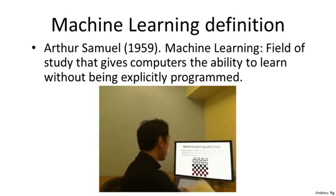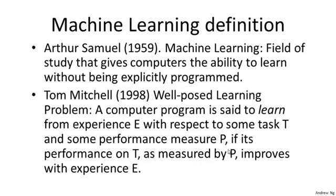Here's a slightly more recent definition by Tom Mitchell at Carnegie Mellon. Tom defines machine learning by saying that a well-posed learning problem is defined as follows: a computer program is said to learn from experience E with respect to some task T and some performance measure P, if its performance on T as measured by P improves with experience E. For the checkers example, the experience E is the program playing tens of thousands of games against itself, the task T is playing checkers, and the performance measure P is the probability of winning the next game against a new opponent.